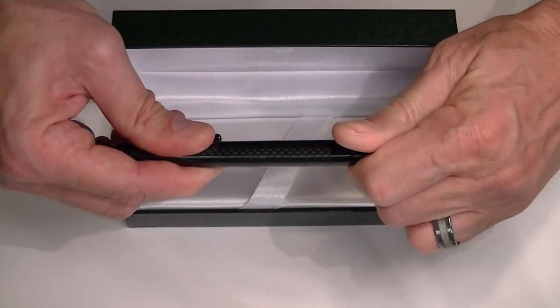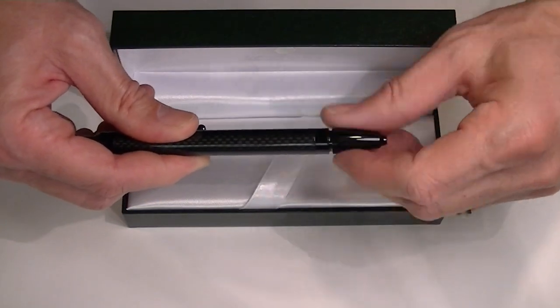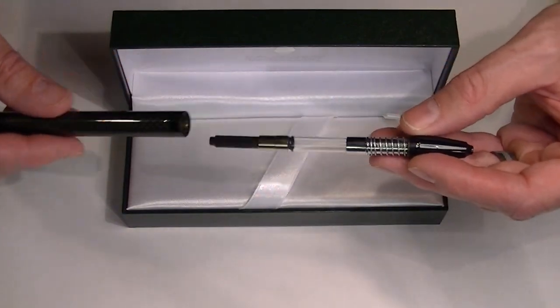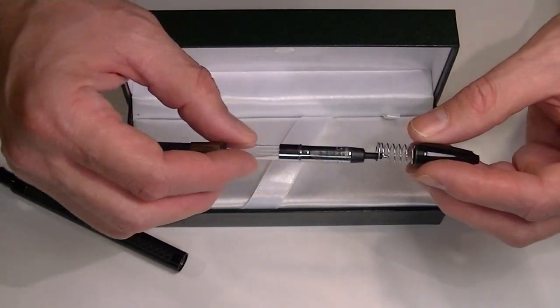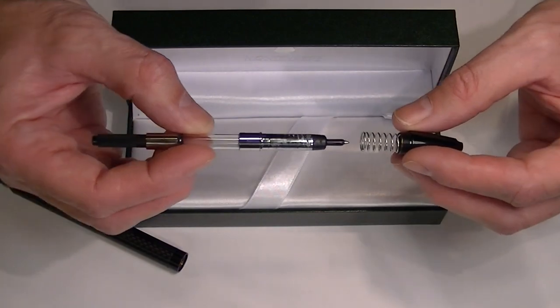You can remove the ink ball by removing the cap here on the end. And this pen comes standard with a converter on it.